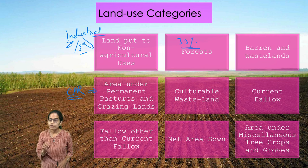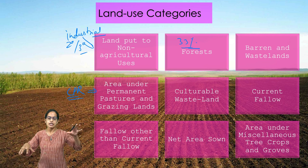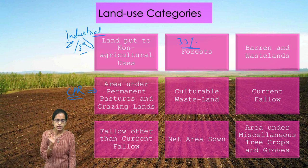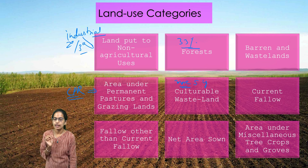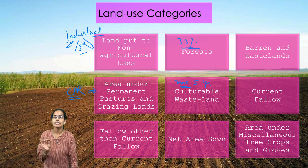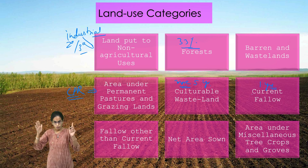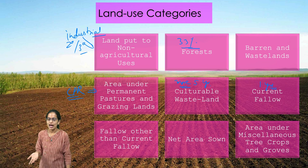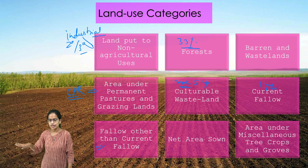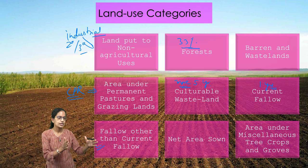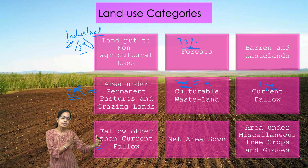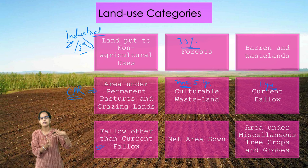Next is culturable wasteland — it is very important to understand the differences between culturable wasteland, current fallow, and fallow other than current fallow. Culturable wasteland is land left fallow for more than five years. Current fallow is land with no cultivation for one year or less. Anything between one and five years falls into fallow other than current fallow.